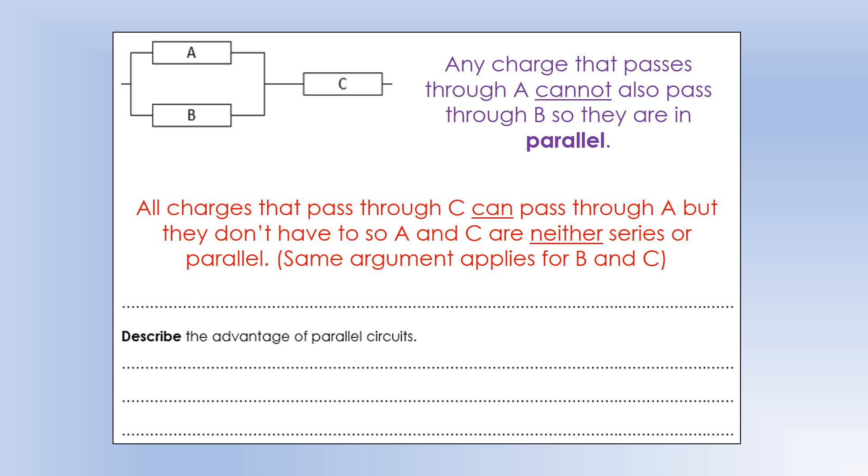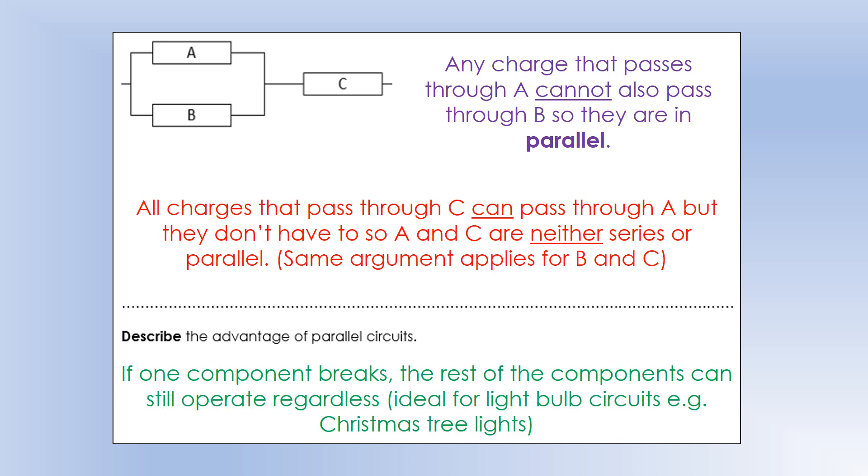And then final point. Why might we decide to connect components in parallel rather than in series? So the main reason is it allows components to break and things to keep working. Because if, let's say in that diagram, A breaks, there's nothing to stop a current going through B and then through C. So it can keep working even though A is broken. And this is really common for light circuits. So most light systems, whether it be in your house or in this case in Christmas tree lights, are connected to some degree in parallel so that if some of them break or one of them breaks, not all of them break. And that completes this video looking at circuit symbols, current, and then finally series and parallel.